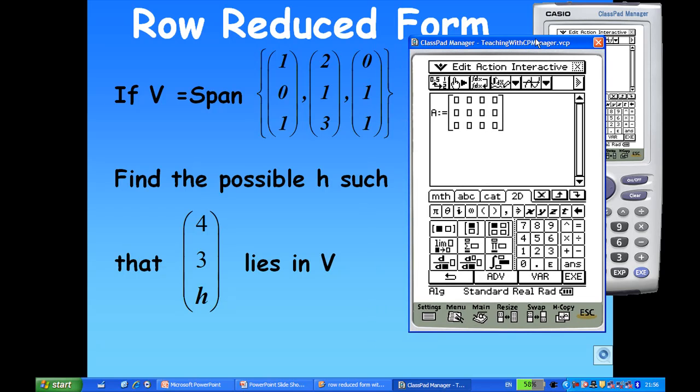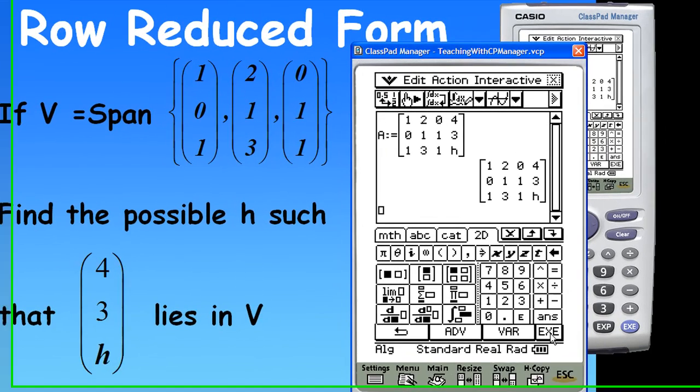So, I want to enter the matrix as 1, 0, 1, 2, 1, 3, 0, 1, 1, 4, 3, H. So, after I finish, I press execute. So, the Classpad will remember the matrix A.